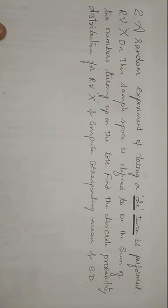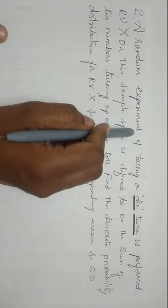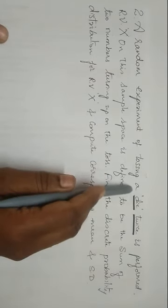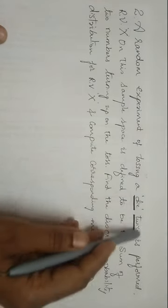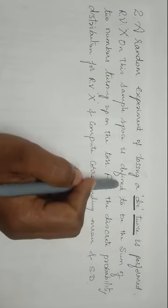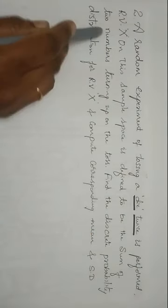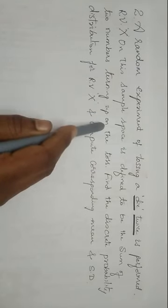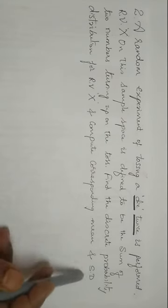Now let us take the second problem. A random experiment of tossing a die twice is performed. The random variable X on this sample space is defined to be the sum of the two numbers turning up on the toss. Find the discrete probability distribution for the random variable X and compute the corresponding mean and standard deviation.